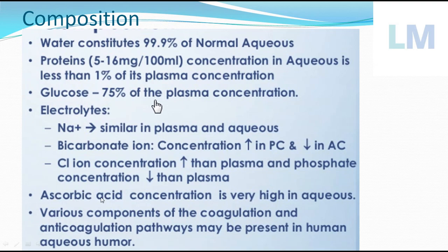Ascorbic acid — that is vitamin C, an antioxidant — is present in very high concentration in the aqueous humor, so that any oxidative stress within the aqueous humor with respect to the lens, iris, or cornea will be counteracted. Coagulation factors and anticoagulant pathways are similar to human plasma, so that neither coagulum formation nor a fully watery consistency results.